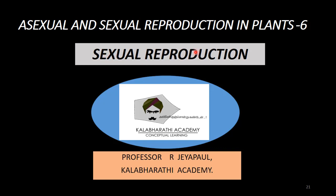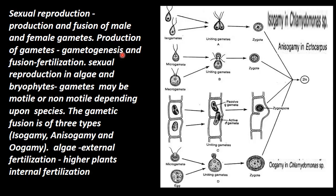When two gametes — one male gamete and one female gamete — fuse to form a zygote, this is called sexual reproduction.